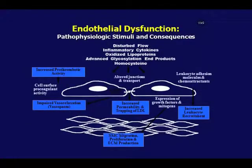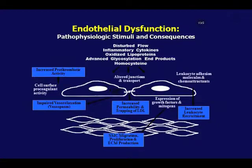There are huge numbers of mediators — you can put thousands of things in here. You pick whatever you like to insult your arteries. But the response is basically inflammation, oxidative stress, and autoimmune disease.